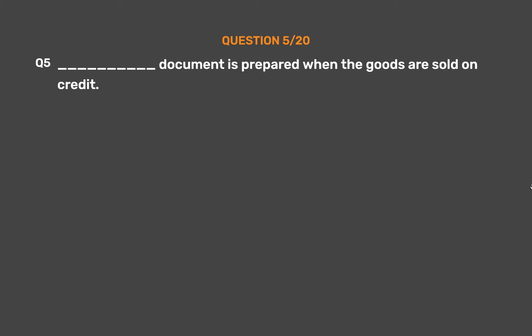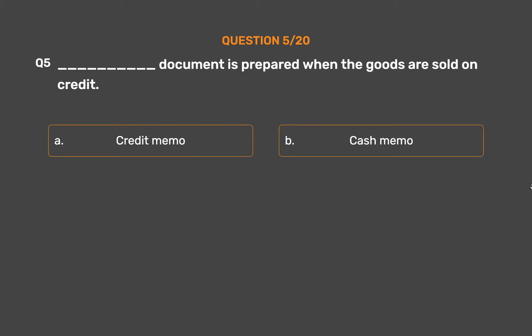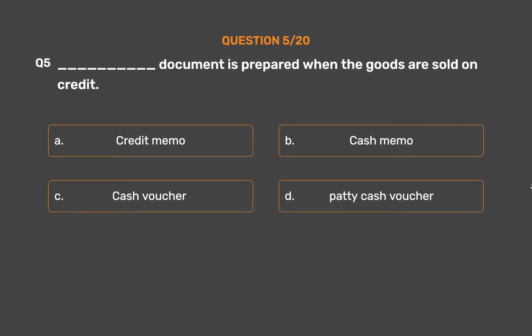Question number five: which document is prepared when goods are sold on credit? Option A: credit memo. Option B: cash memo. Option C: cash voucher. Option D: petty cash voucher.